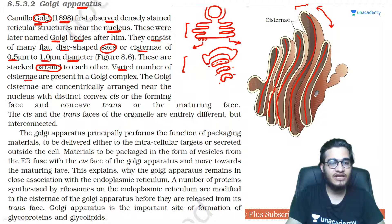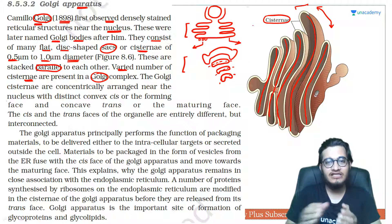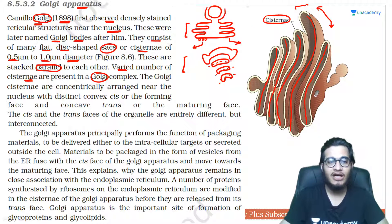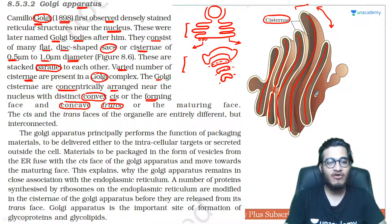Varied number of cisternae are present in Golgi complex — yani yeh variable ho sakti hain number mein, jaise 5, 7, ya 10 ho sakti hain. Jo cell mein jitni zyada secretion ki zaroorat hoti hai utni zyada cisternae hoti hain. Yeh cisternae concentrically arrange hoti hain near the nucleus, jiske do alag-alag portions hote hain: pehla aapka convex portion ya cis portion, jise aap forming face bhi bolte ho; aur doosra concave ya trans portion, jise maturing face bola jaata hai.